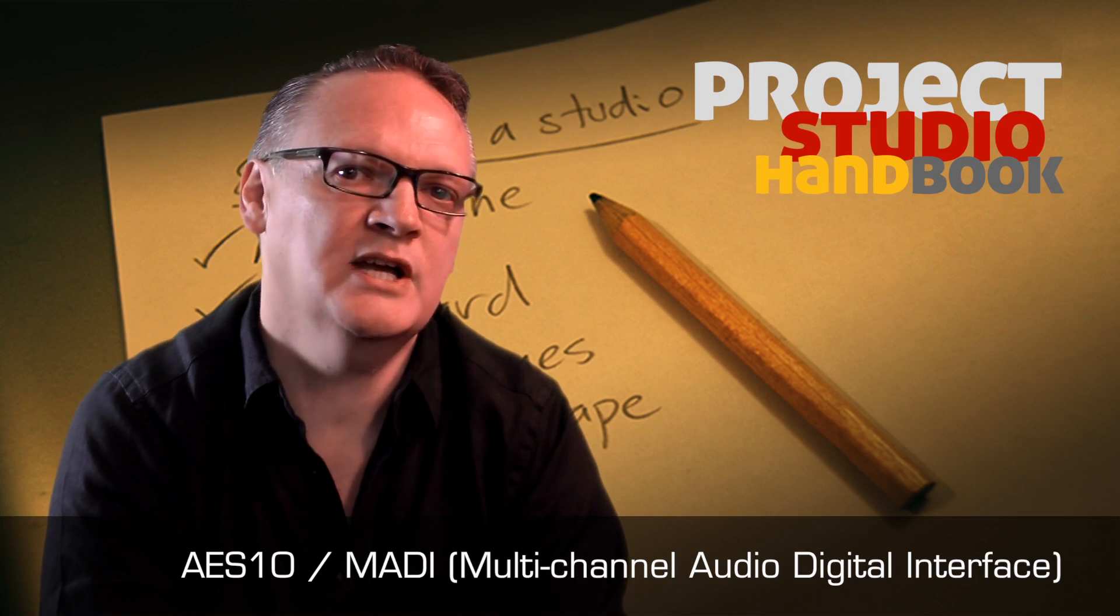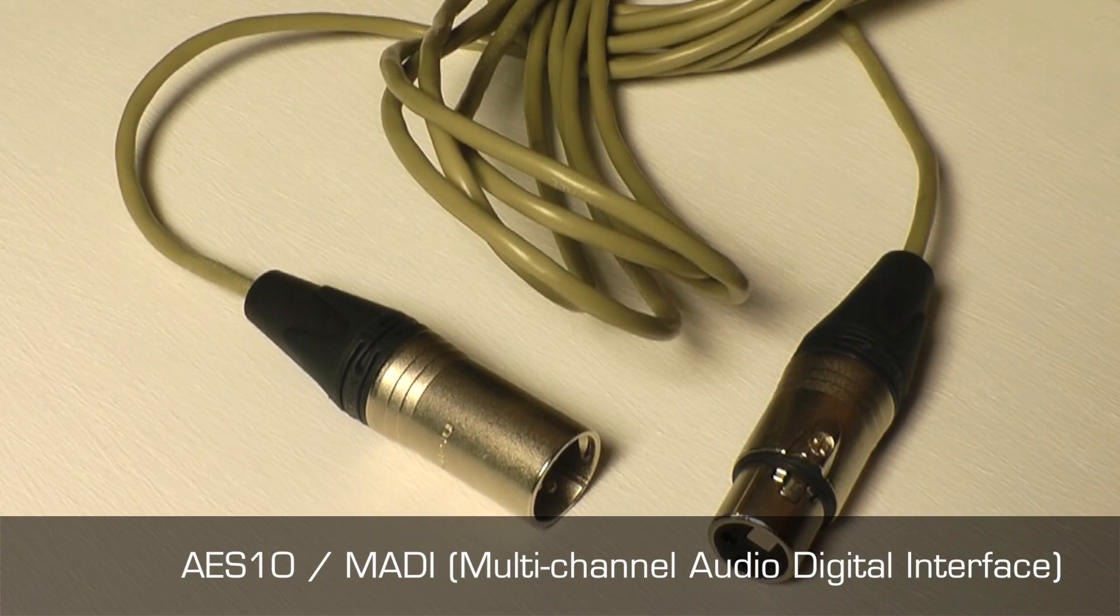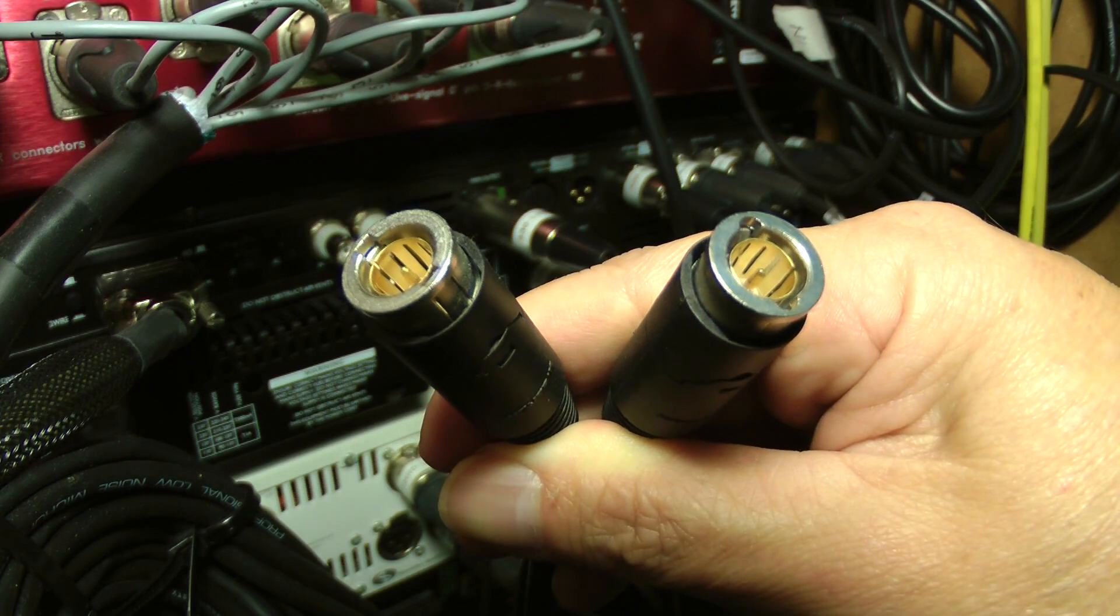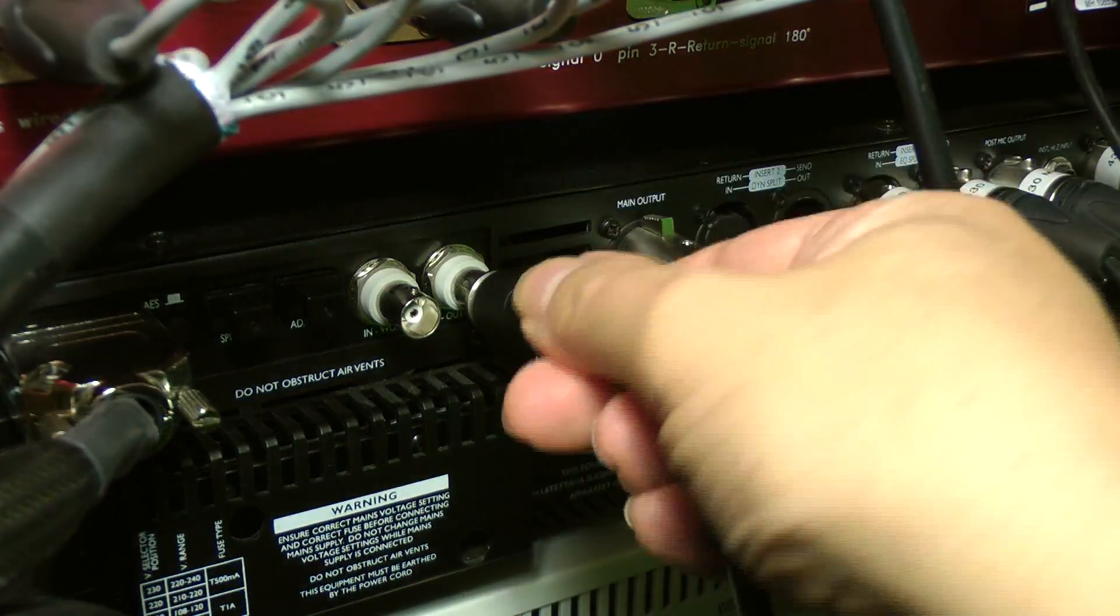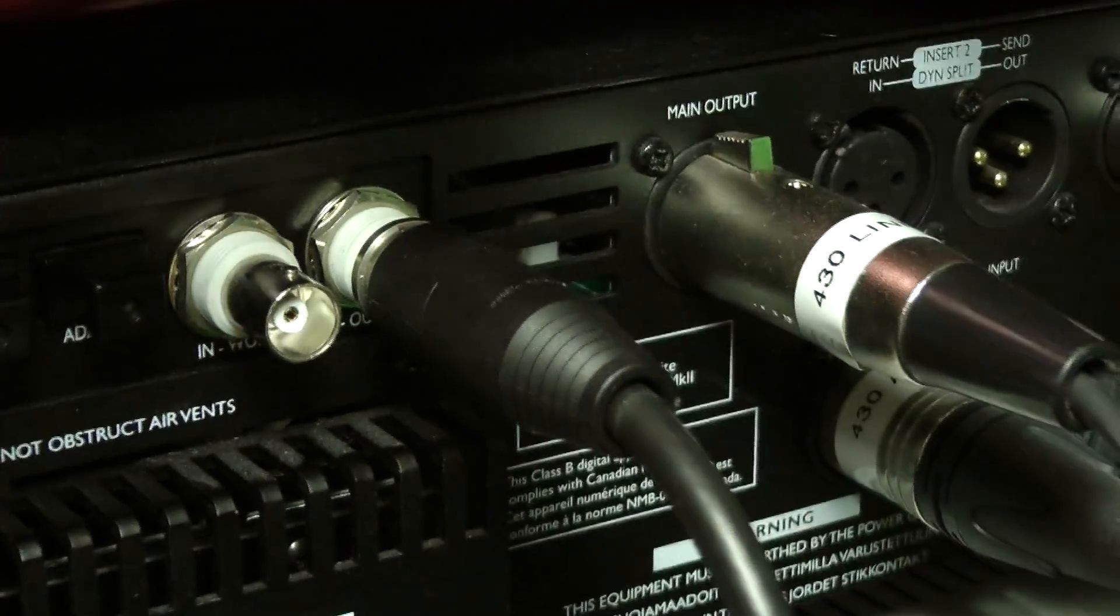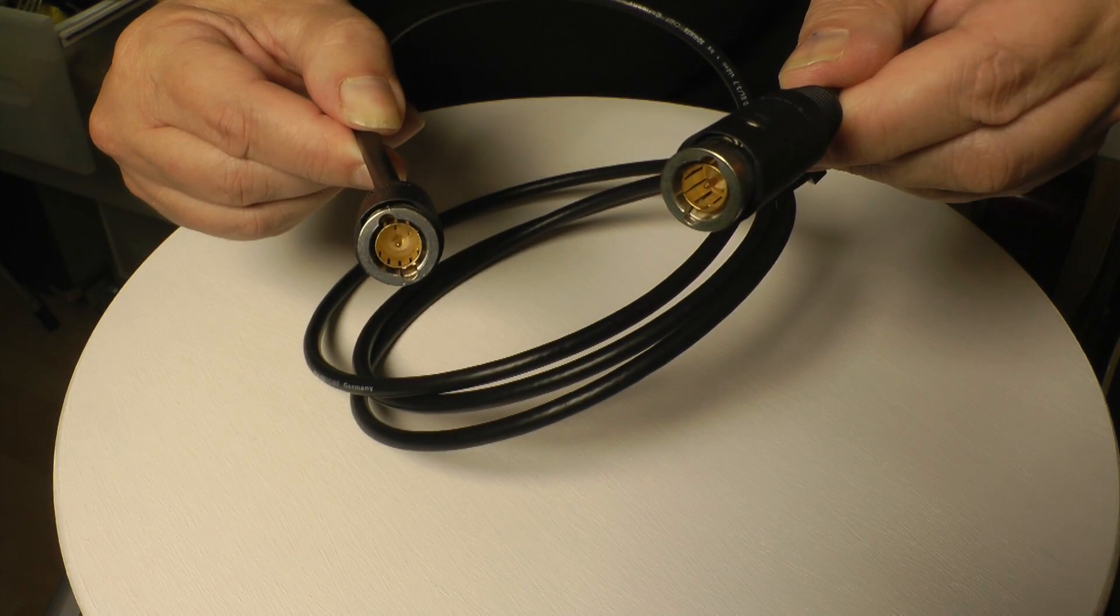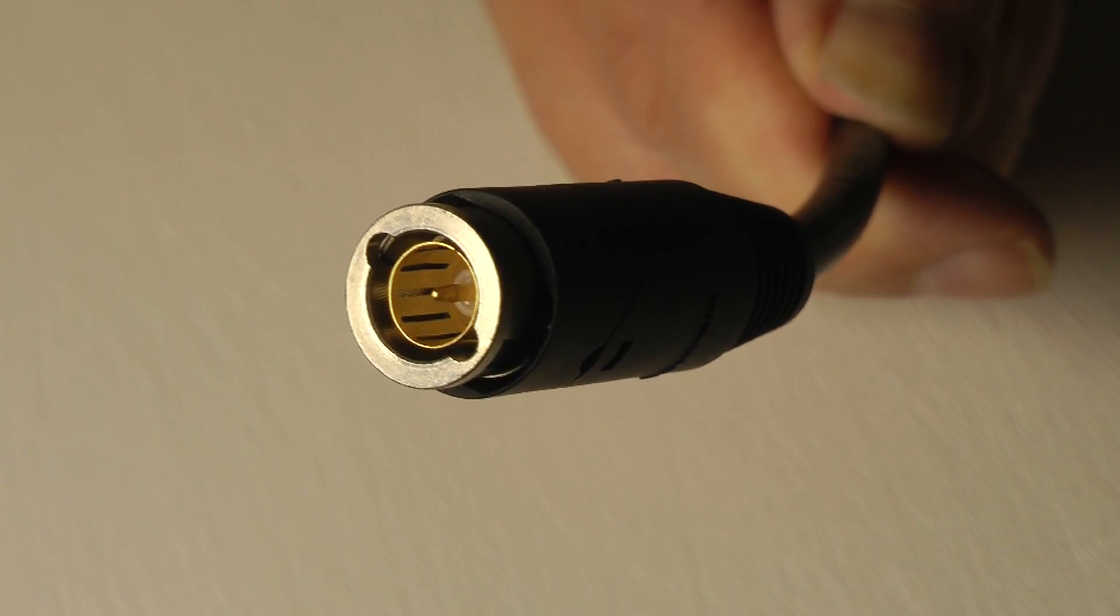Essentially MADI is a multi-channel version of AES-3 capable of 28, 56, or 64 channels over a single BNC coaxial or fiber optic connector. Cables can be hundreds of metres long so it has found favour in broadcast, live sound, and large studio complex installations. MADI does not carry a word clock signal so a separate BNC sync connection must be used.